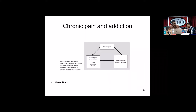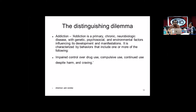Chronic pain, addiction, and psychiatric comorbidities coexist and are very difficult to delineate in many patients. Addiction is a primary chronic neurobiologic disease with genetic, psychosocial and environmental factors influencing its development. It is characterized by impaired control over drug use, compulsive use, continued use despite harm, and craving. Many patients with chronic pain are prescribed opioids, so we must distinguish whether they actually have substance dependence or something else.